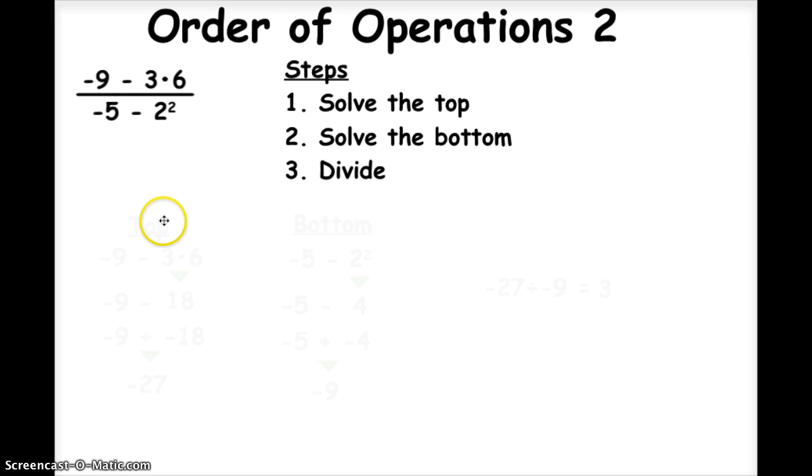Let's work on the first problem and solve for the top. So the top expression is negative 9 minus 3 times 6. I'm going to solve this using order of operations. The two operations I have are subtraction and multiplication. So since multiplication is higher in the order of operations, I'm going to do that first. I'm going to take 3 times 6, which is 18, and then the rest of the problem is going to stay the same.